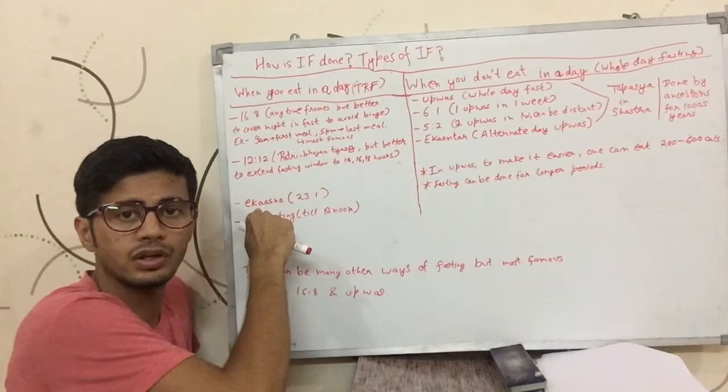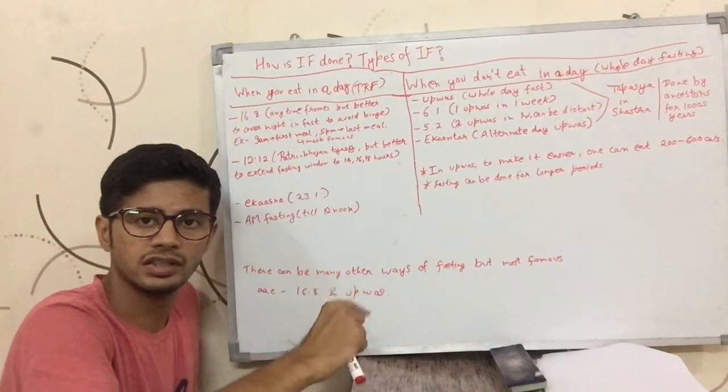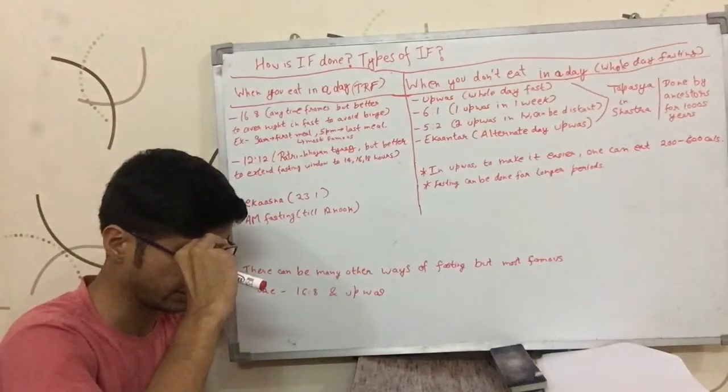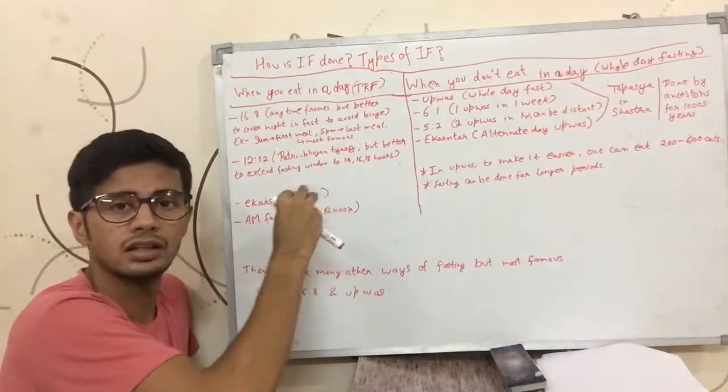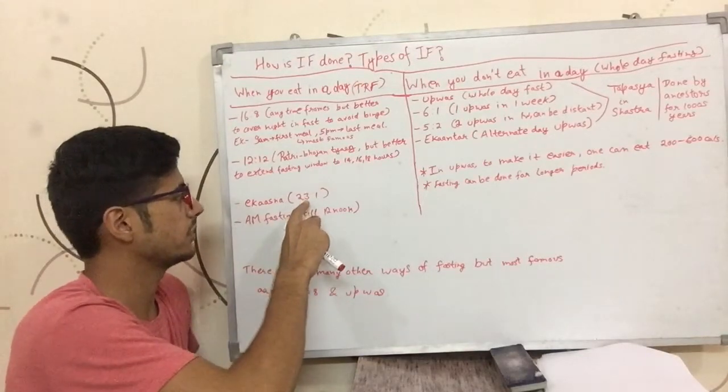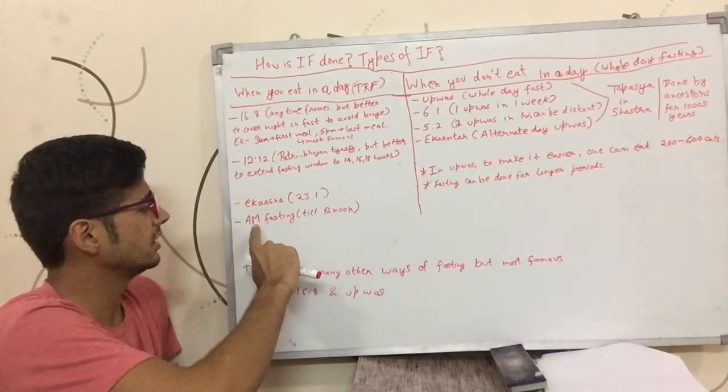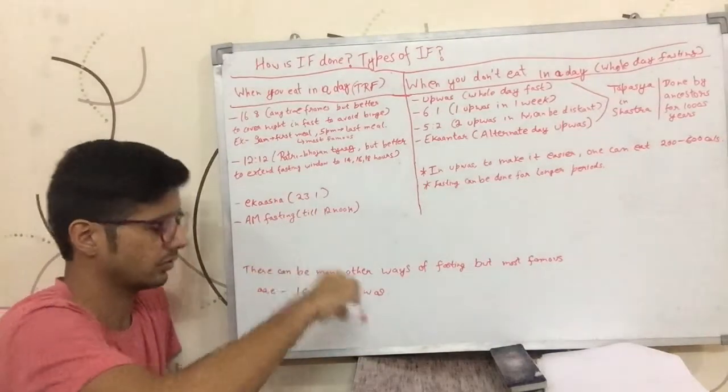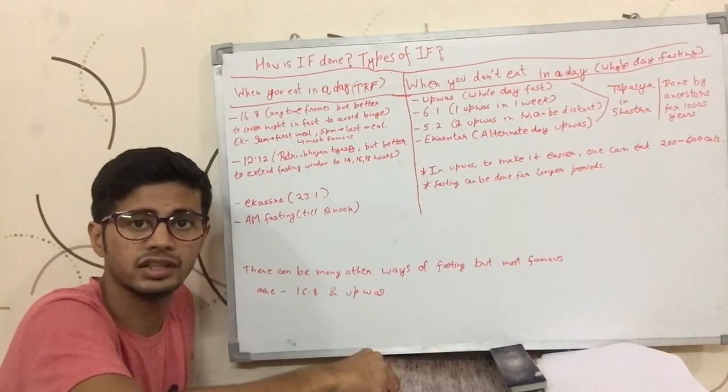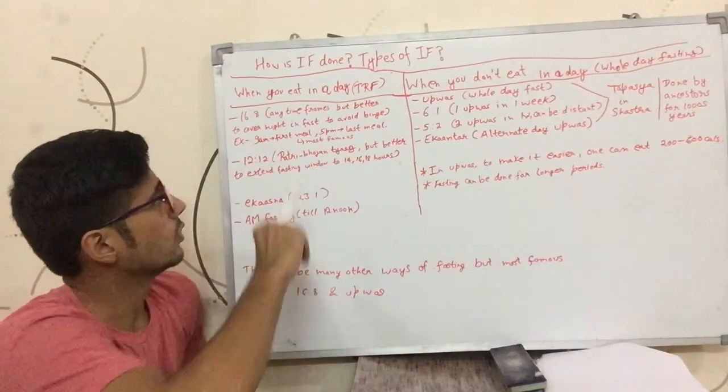Where they would just sit down once in the whole day and eat whatever they can in one sitting, and they wouldn't eat again for that day. That's equivalent to eating in around 40-45 minutes within one hour, and you do not eat for the rest of 23 hours in the day. Then there's AIM fasting, where after you wake up at 6, 7, 8, or 9 in the morning, you do not eat anything till 12 noon.